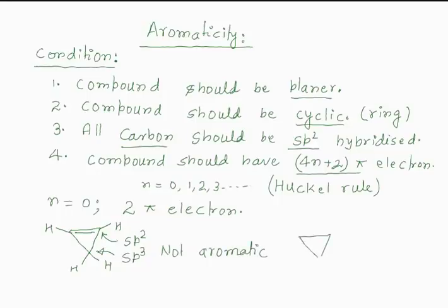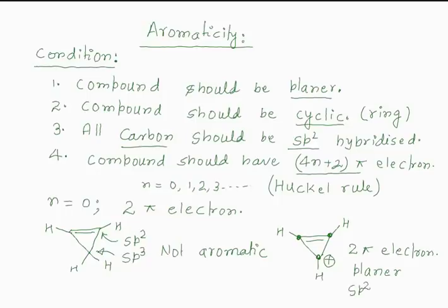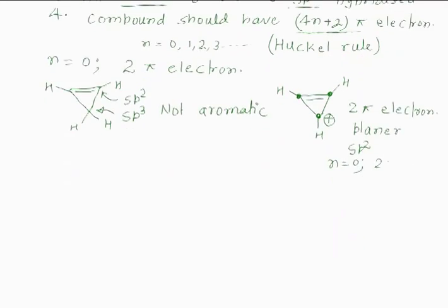But if we make the cation of the same compound, this is called the cyclopropenyl cation. Now it has 2 pi electrons and the compound is also planar. All carbons are sp2 hybridized — this carbon is sp2, this is sp2, this is sp2, and the carbocation carbon is also sp2. It satisfies n equals 0 of Hückel's rule, giving 2 pi electrons.